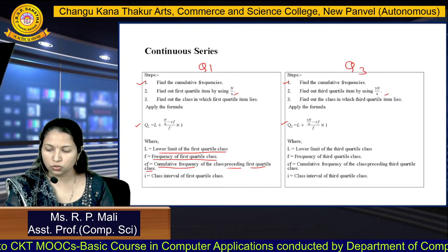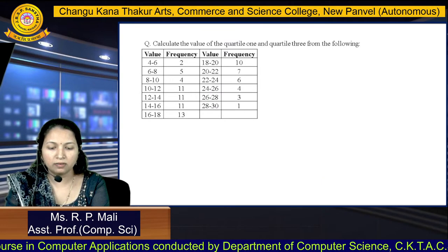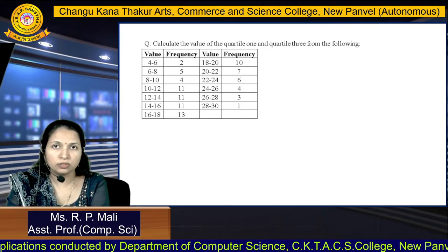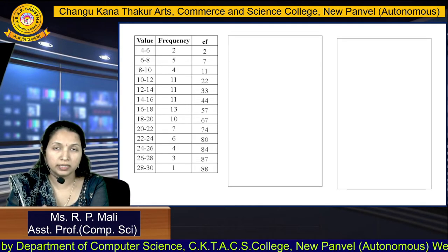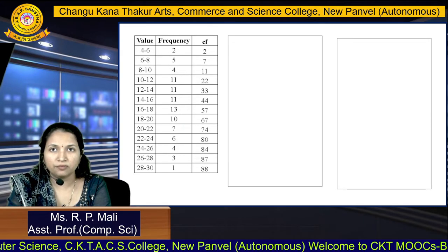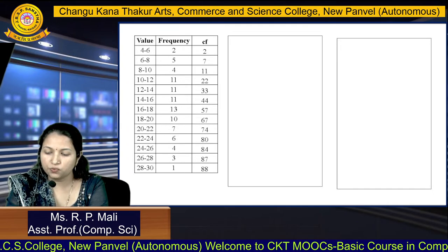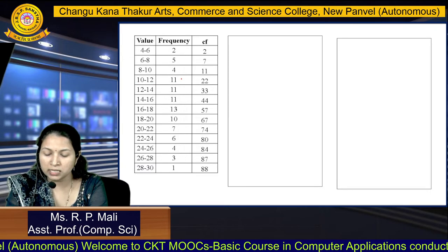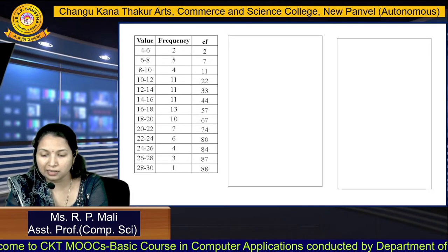We are going to solve one question based on this. Calculate quartile 1 and quartile 3 from the following data. They have given us the values and the frequency. The classes are: 4 to 6 with frequency 2, 6 to 8 with frequency 5, 8 to 10 with frequency 4, 10 to 12 with frequency 11, 12 to 14 with frequency 11, and so on.